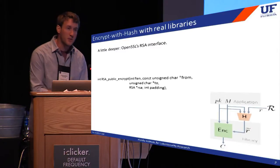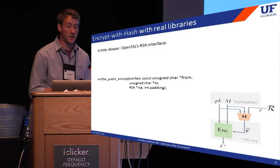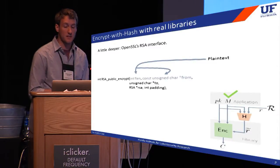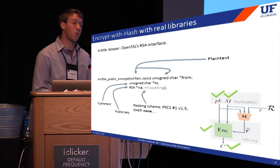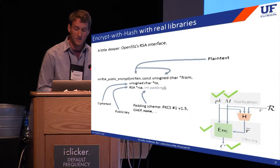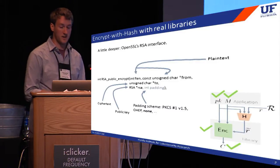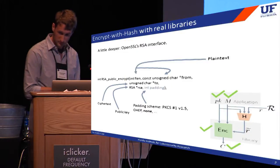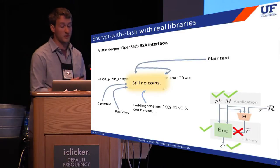If you know what you're doing, the library should provide a little more flexibility. Let's go a level deeper and look at OpenSSL's interface for RSA-based encryption. As usual, the programmer provides a buffer for the plaintext and ciphertext and public key. In addition, this interface requires the programmer to specify the padding scheme. OpenSSL implements a few standards and even lets the programmer use no padding at all, which means you can implement raw RSA or handle padding yourself. But this interface still doesn't expose the coins, so the high- and mid-level APIs don't let us implement Encrypt with Hash.